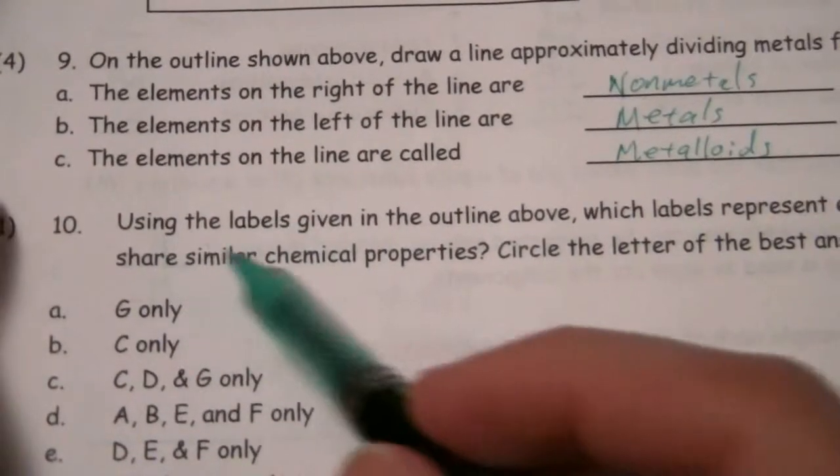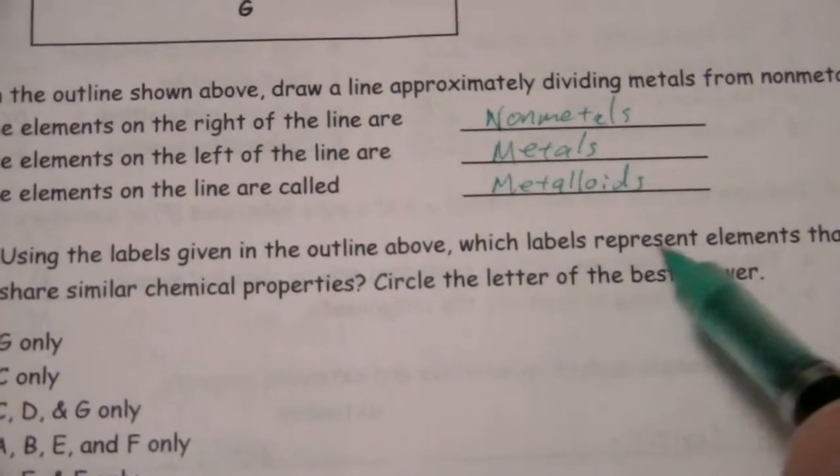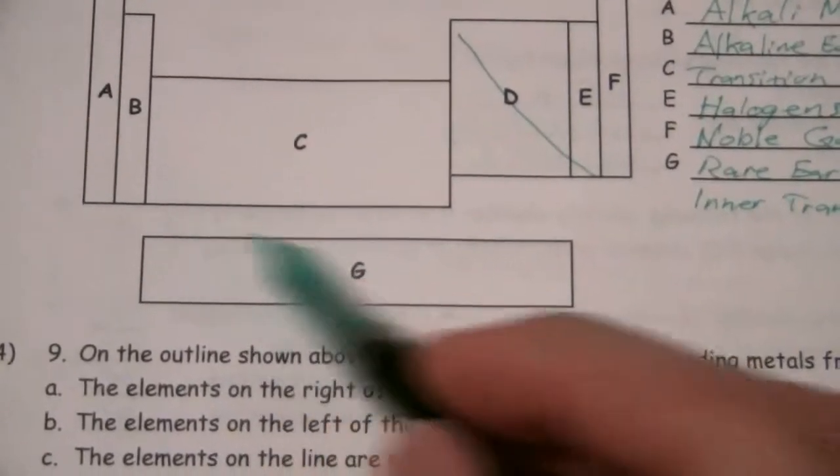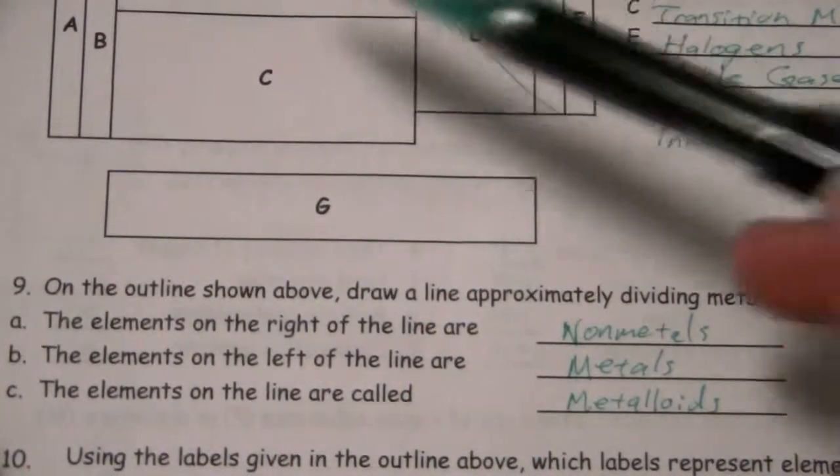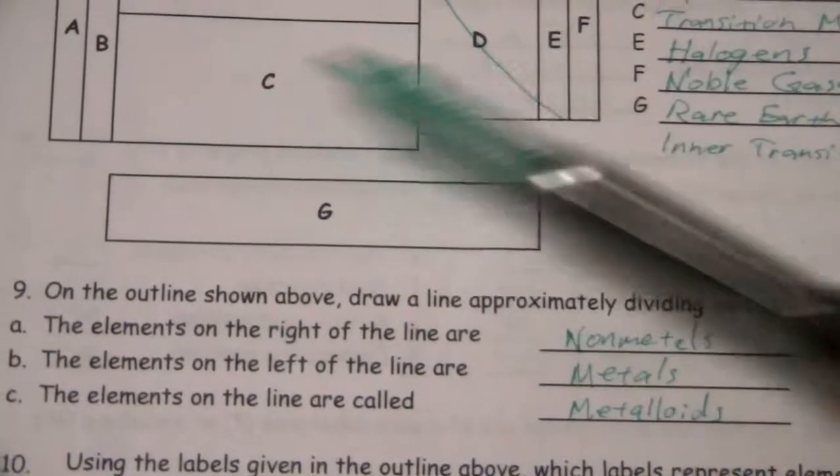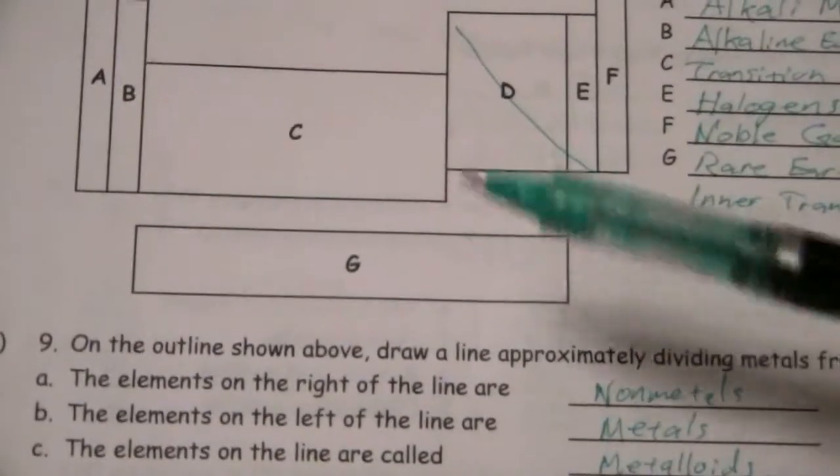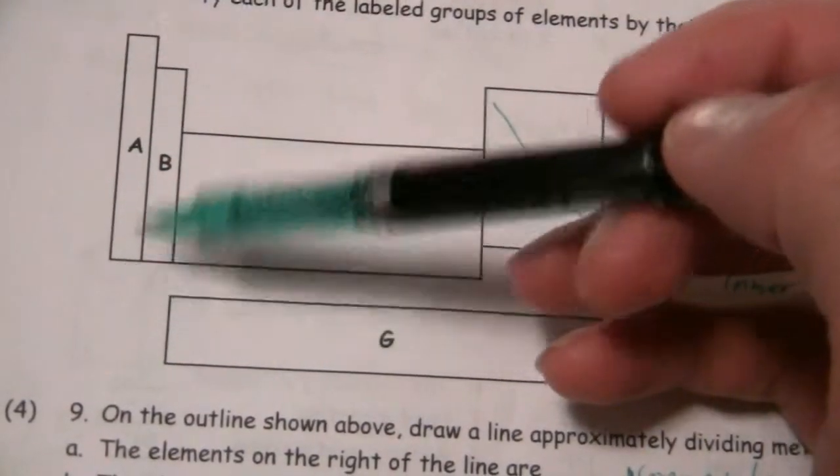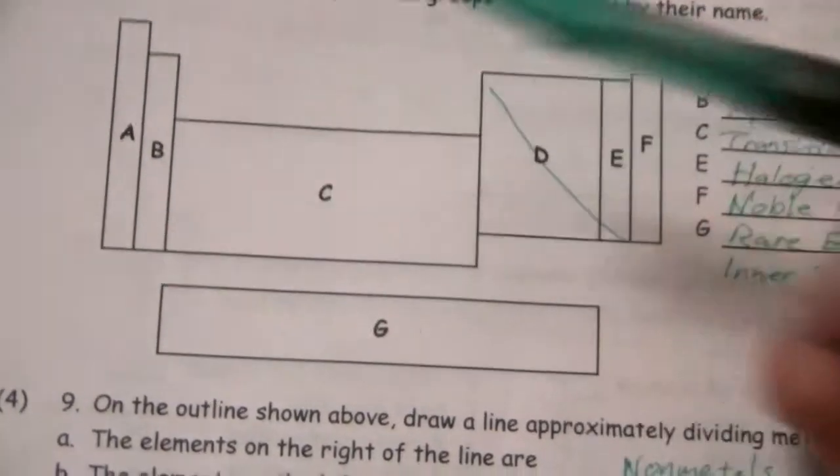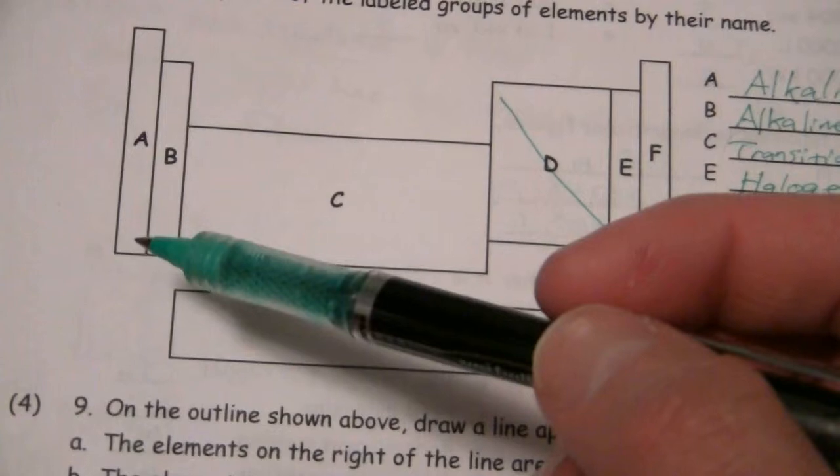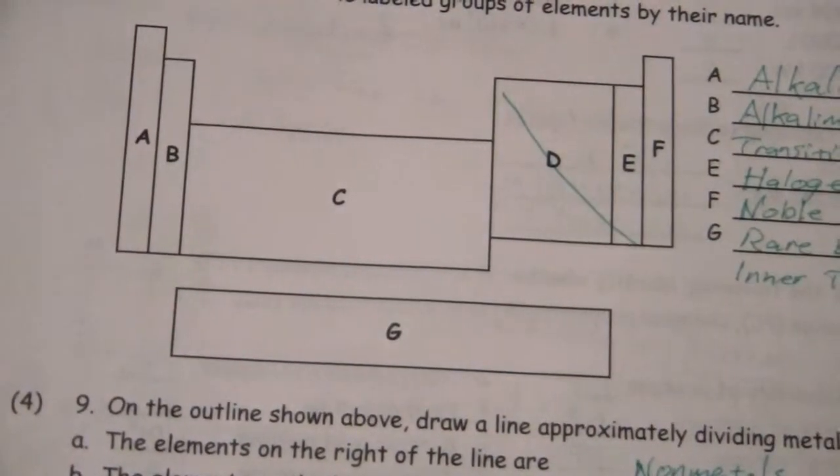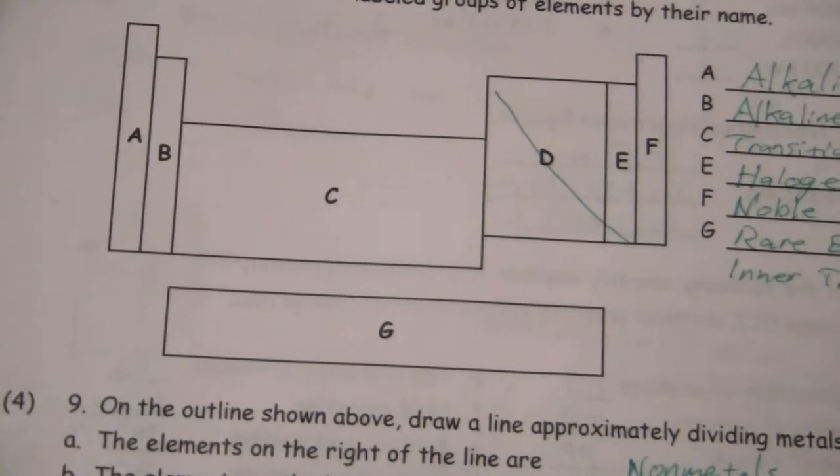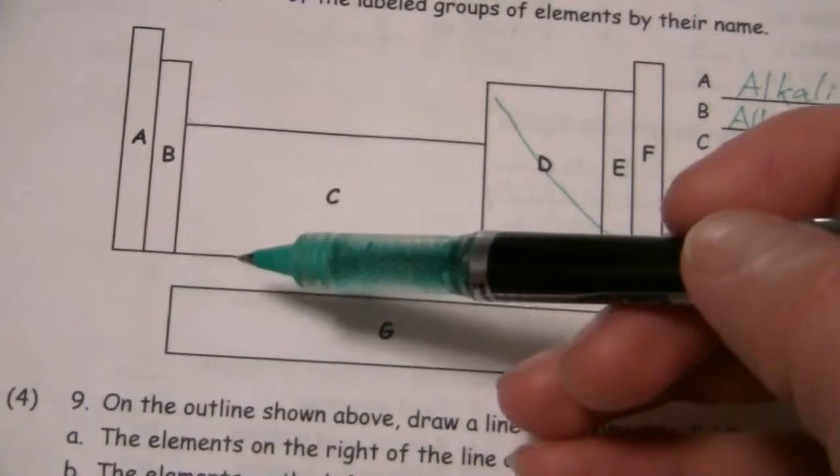Next, it says, using the labels given in the outline above, which labels represent elements that all share similar chemical properties. So, which labels represent elements that all share the same or similar chemical properties. In other words, the elements in group A, or this grouping, as it's labeled here, do they all share similar properties? Do B all share similar properties? C. So, we have to remember which groups have similar properties. How are they grouped?